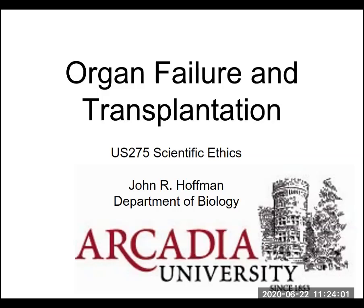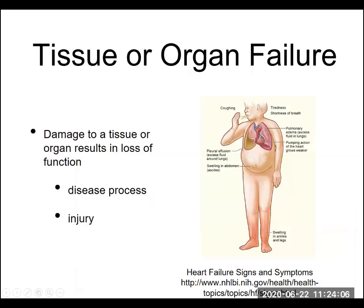Organ failure and transplantation is just going to be one example of that. Keep in mind how the body works — we've got special structures in the body that are either collections of cells in the form of tissues or distinct organs, clusters of cells in a specialized structure within the body that are going to be doing something that we need.